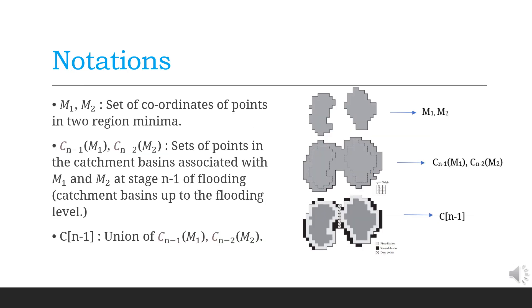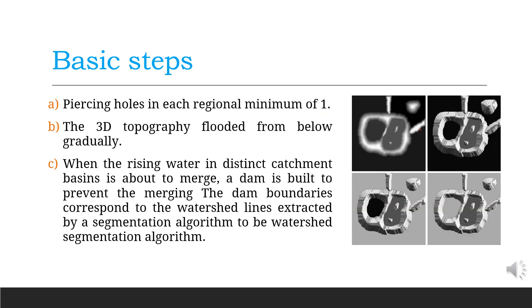Let m1, m2, ..., mR be the sets denoting the coordinates of the points in the original minima of an image represented as g. Initially, the image will be a gradient image. Let c be a set that denotes the coordinates of the points in the catchment basin associated with the regional minimum presented as m. cn is used to denote the union of cn-1 of m1 and cn-2 of m2, which can be clearly seen in the image present here.